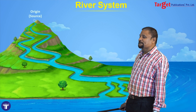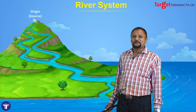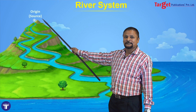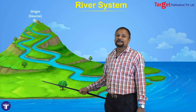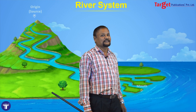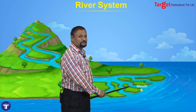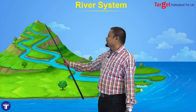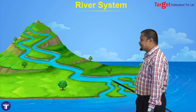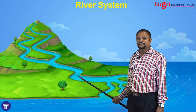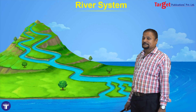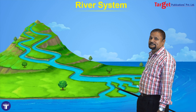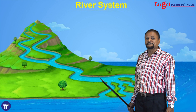The first one is the birthplace of any river. The birthplace of a river is called origin or source. The end of the river is called mouth. Right from the origin to the end — that is the mouth — the way of the river is called course. So right from the origin till the mouth, it is called the course of the river.